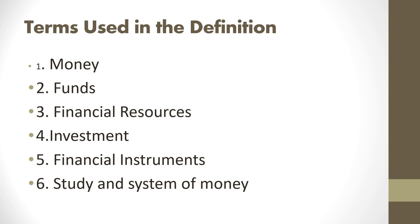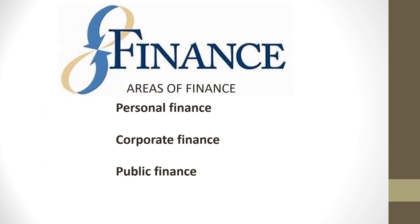Based on the definitions, we can take down important terms: money, funds, and financial resources — they are essentially the same. Then we have investments, and financial instruments as a form of investment. We also have the term 'study and the system of money.' So when we talk about finance, we will study money, funds or financial resources, and the system of money — or how we're going to manage our financial resources.